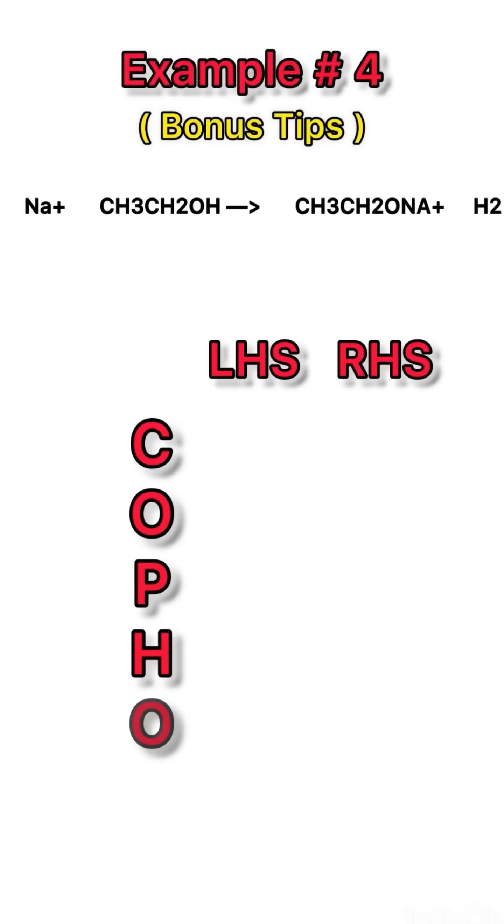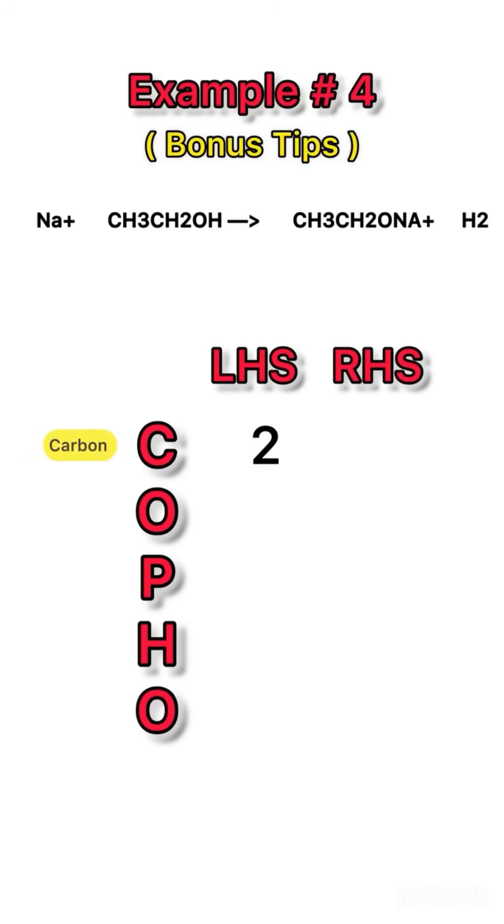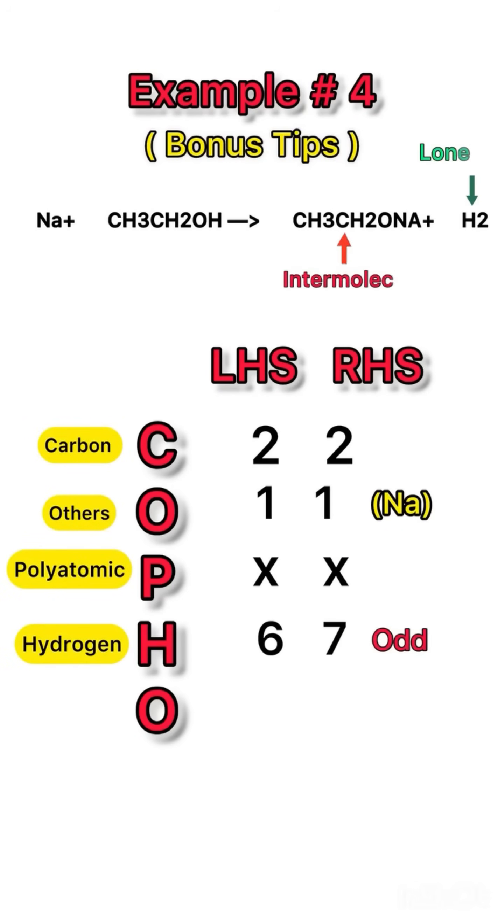Bonus tip 2: lone atoms first. Always adjust lone atoms, that is atoms present without any other element, before disturbing atoms inside bigger groups. It saves time and prevents repeated iteration. Let's see this through an example. Hydrogen on the right side it's 7 and on the left side it's 6. Put half in front of H2, then take LCM to remove the fraction. Your equation is balanced now. Note that we haven't disturbed the intermolecular hydrogen at all.